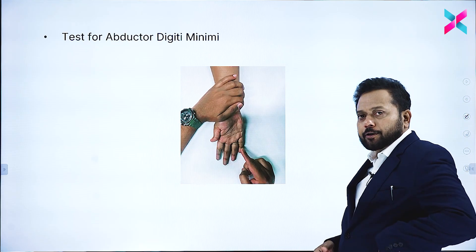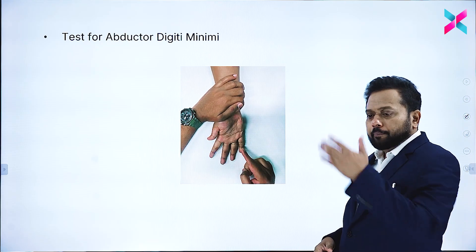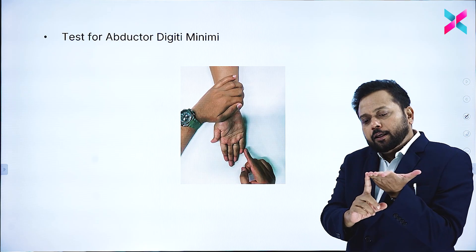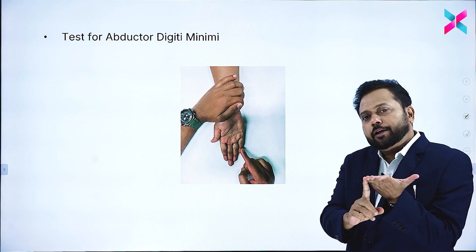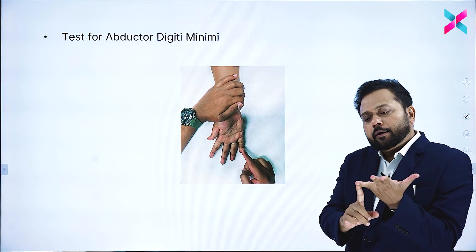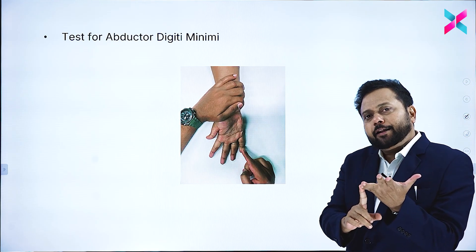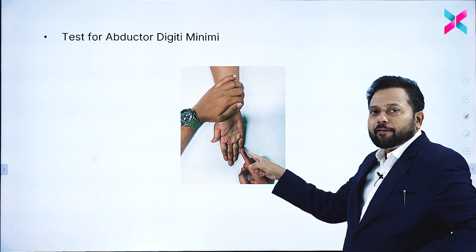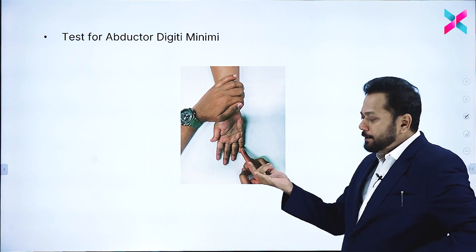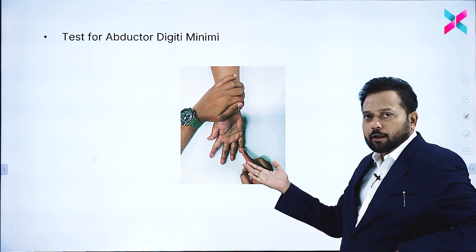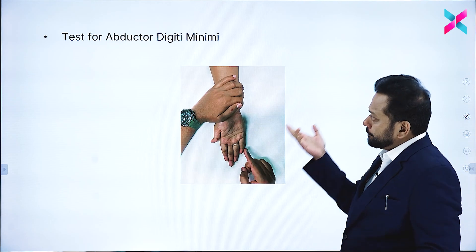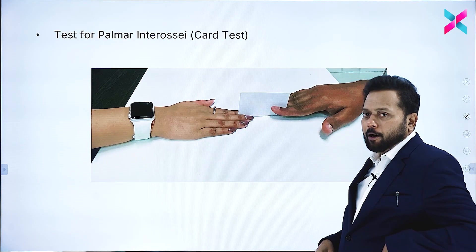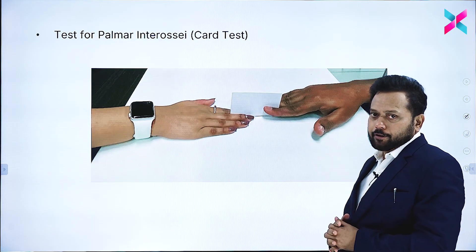The third test is for abductor digiti minimi. Ask the patient to place the dorsum of their hand on a table, give resistance to the little finger, and ask the patient to abduct the little finger against resistance. If the patient has an ulnar nerve palsy, they cannot abduct the little finger.